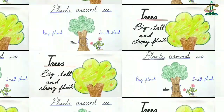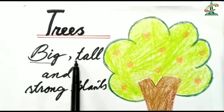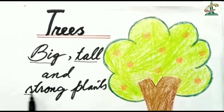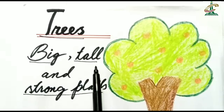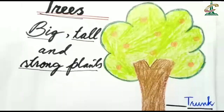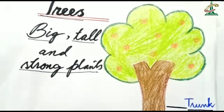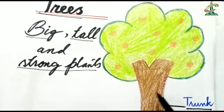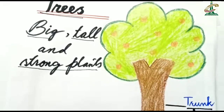Let's learn about the big plants first. Big, tall and strong plants are called trees. And students, this is the stem, and the stem of the tree is called the trunk.